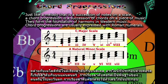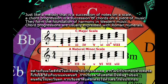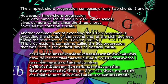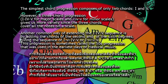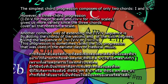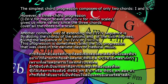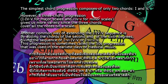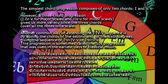Chord progressions are usually expressed with Roman numerals. The simplest chord progression is composed of only two chords: the first and fifth. However, a three-chord progression — first, fourth, fifth — gives us more variety, since the three chords cover all the notes on a scale.